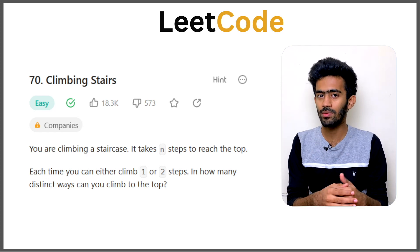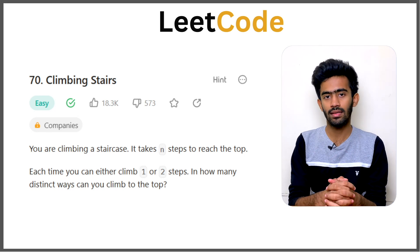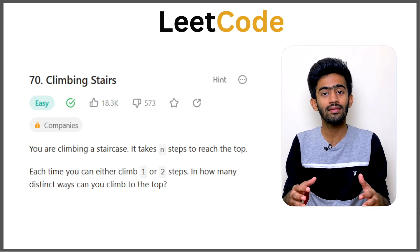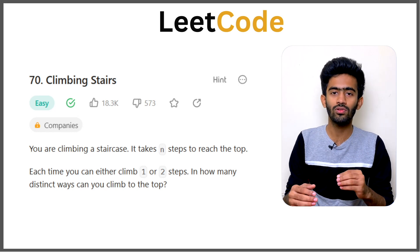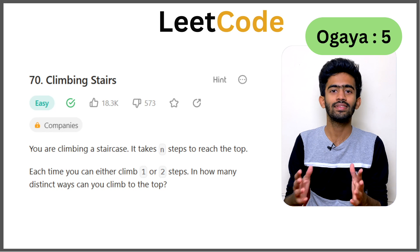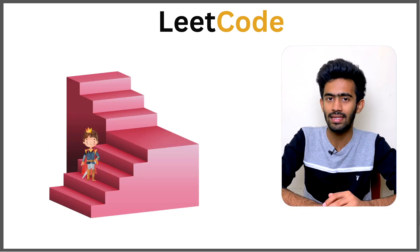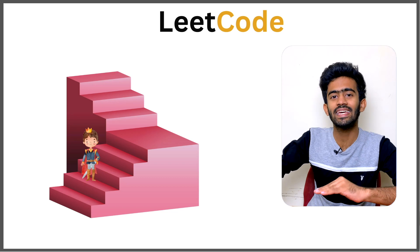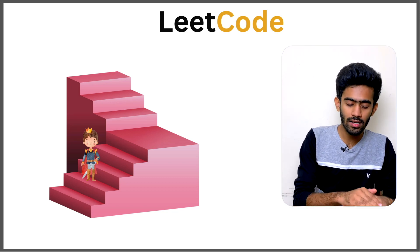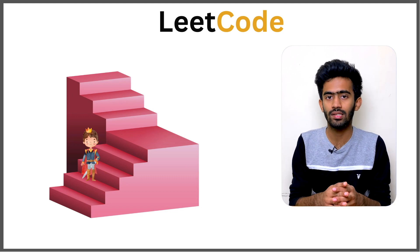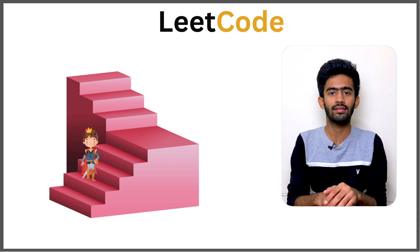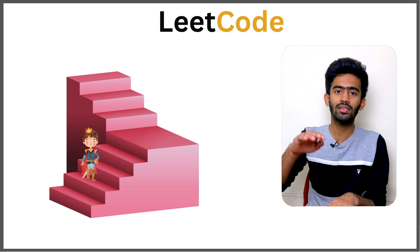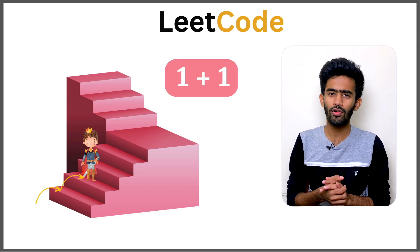So how many ways can you climb to the top? We need to start from the base case. Here we go to the second step — the second step is the destination. If you go to the second step, you can go from the ground level to the first level, then to the second step. So 1 plus 1 is one obvious solution.